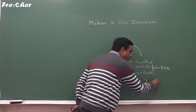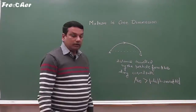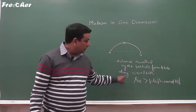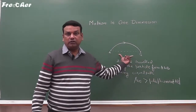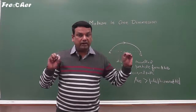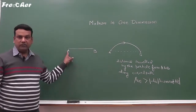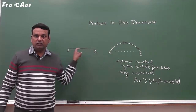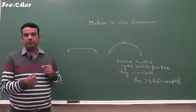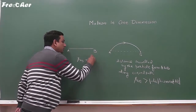The distance travelled by the particle from A to B along the curved path is greater than the magnitude of displacement, which is taken along the straight line path. But in another case, if the particle is moving on a straight line from A to B, then if you measure distance and displacement in magnitude, both are same — that is, S_AB is equal to the magnitude of displacement AB.